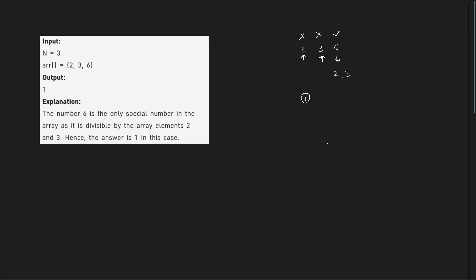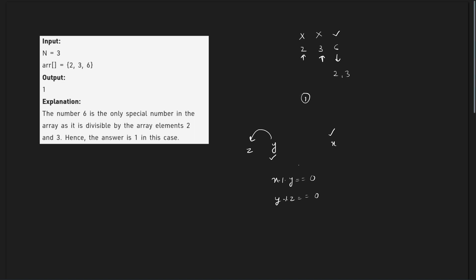If you have any number x and there exists a divisor of x — let's say any number y such that x mod y is equal to 0 — that means x is a special number. And also if there is some number z which divides y such that y mod z is equal to 0, then y will also be a special number. We have to count these special numbers.